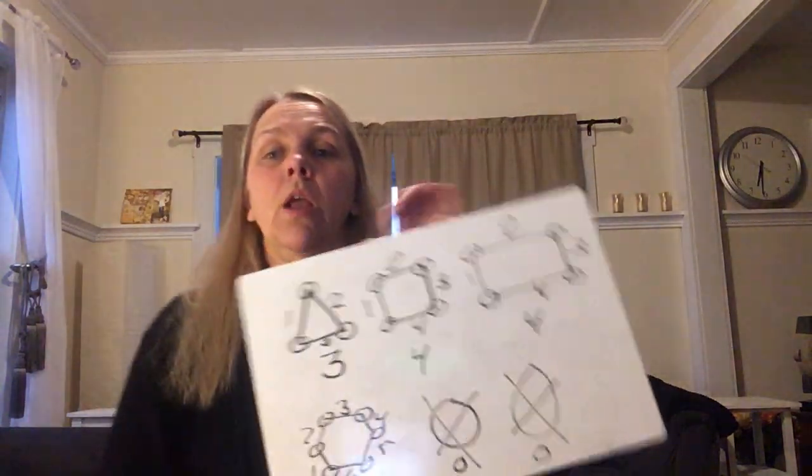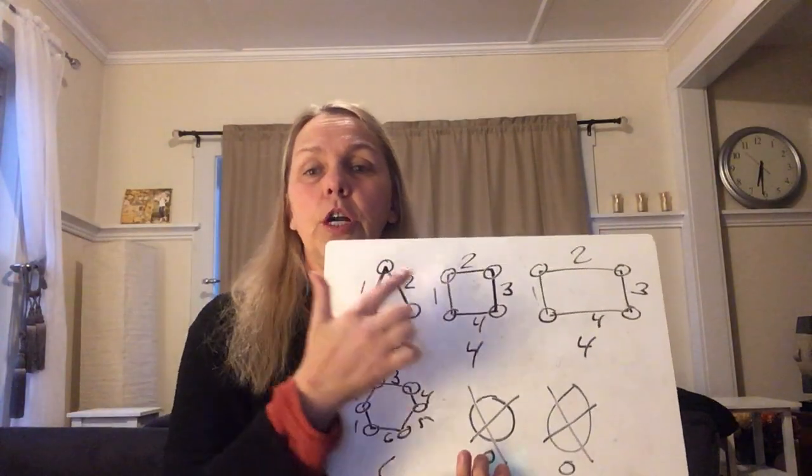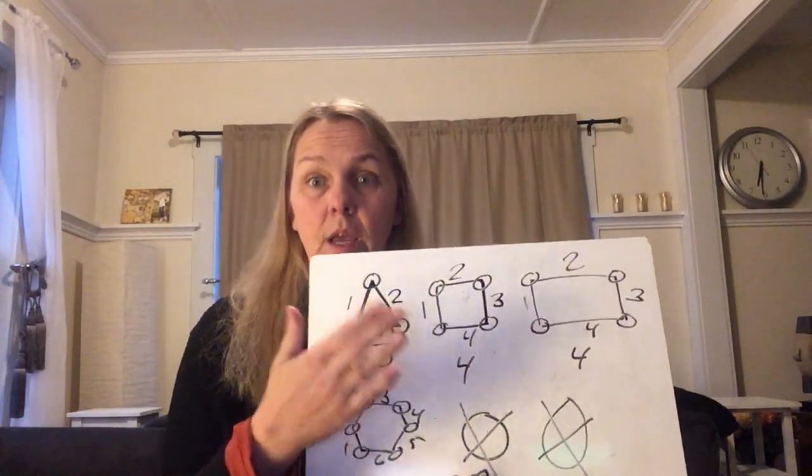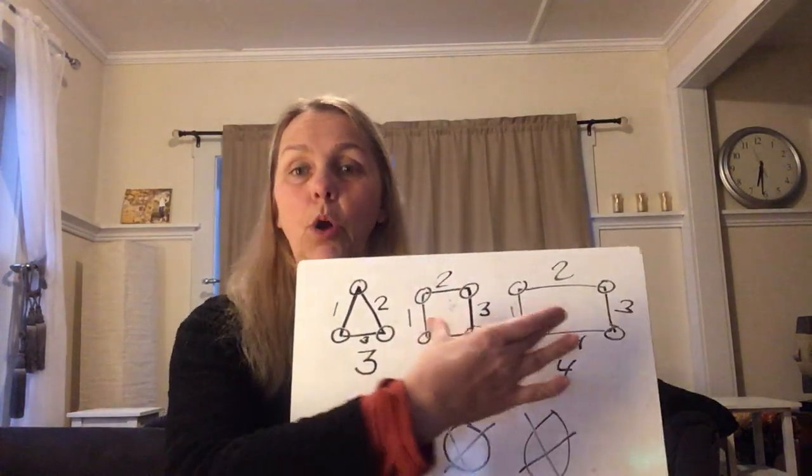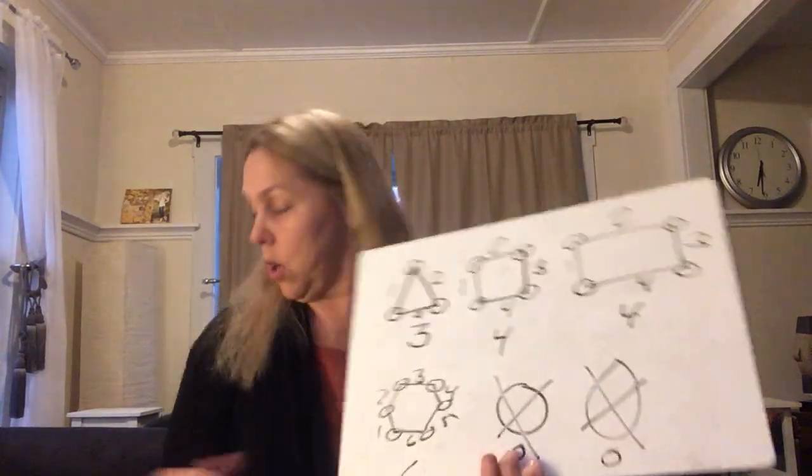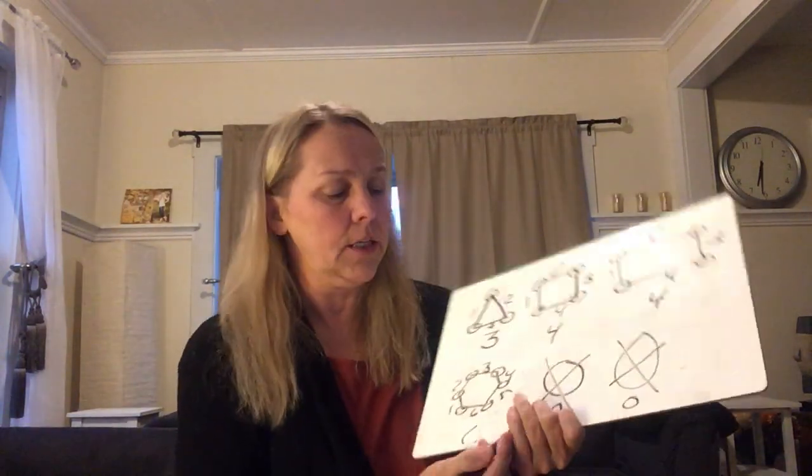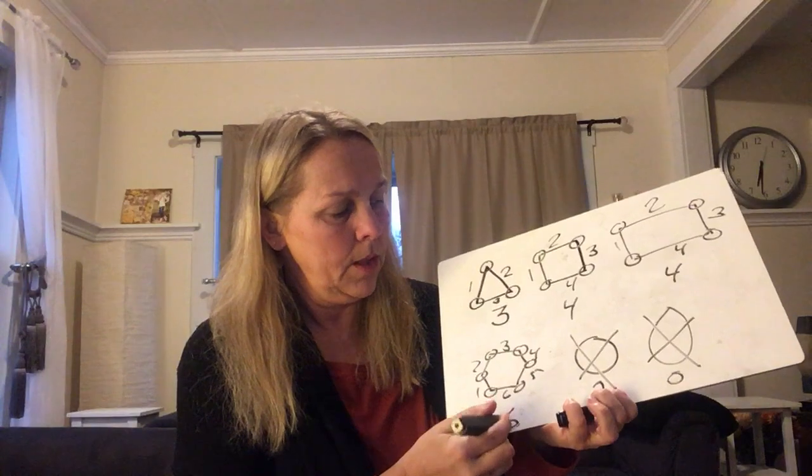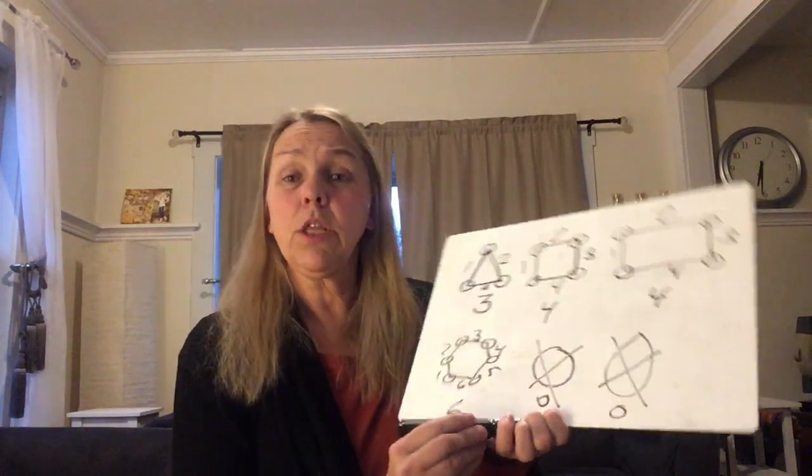Okay, now we're going to get to make those with fun things around your house. So for the triangle, you're going to need three items. And for the others, you're going to obviously need more. You need four, four, and six if you want to attempt the hexagon. Oh, my six went away. Let me fix that. Okay. So let's start with the triangle.